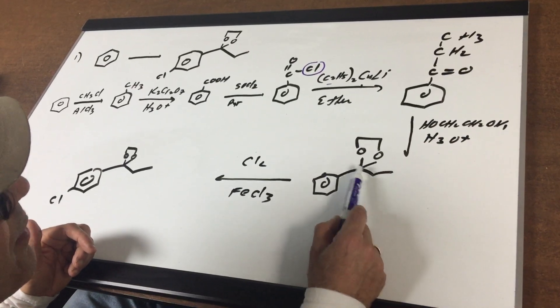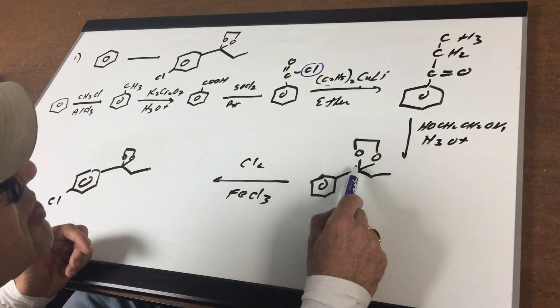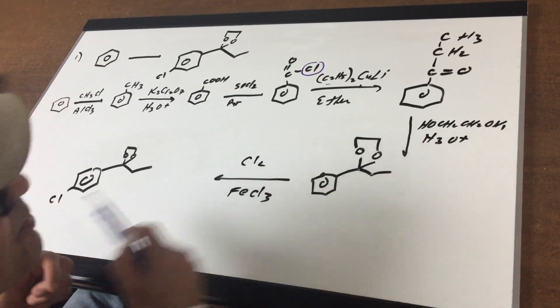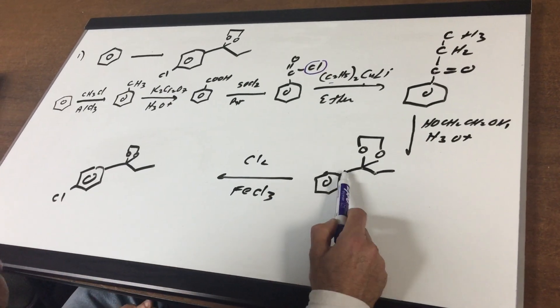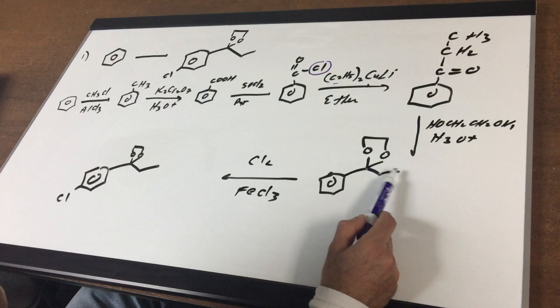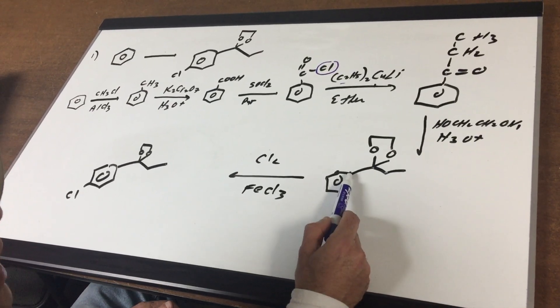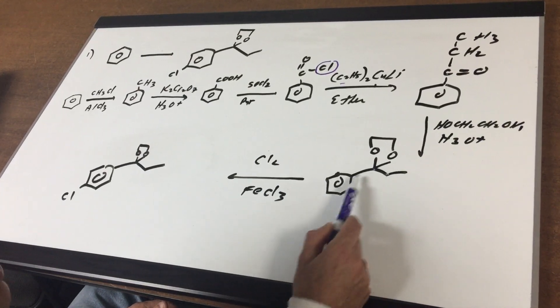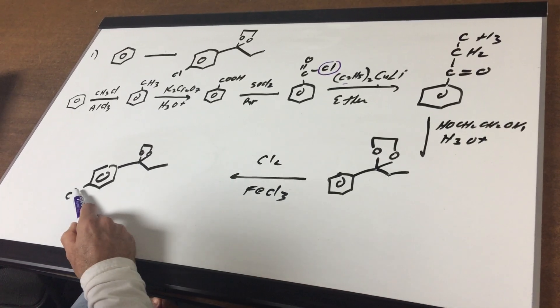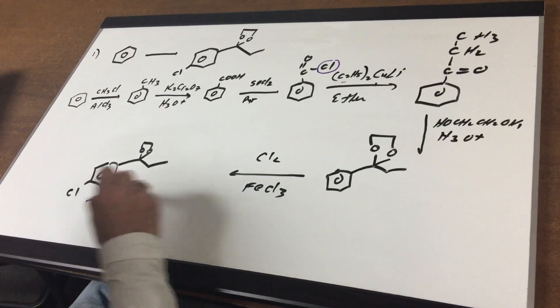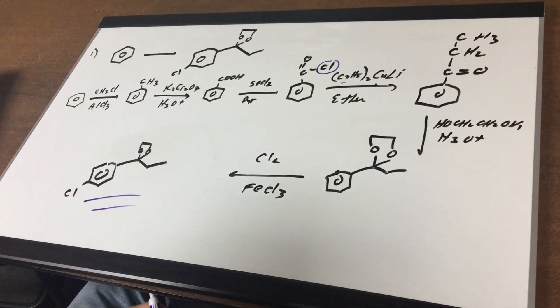And that protecting group, three carbons, is put on like such. This protecting group, just think of it as a big gigantic R group. And it's going to direct the chlorine ortho and para. But because it's so big, it'll direct it to the para. And therefore, this would be the main isomer.